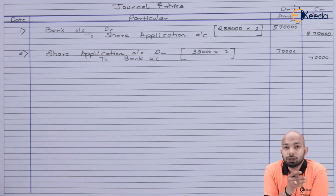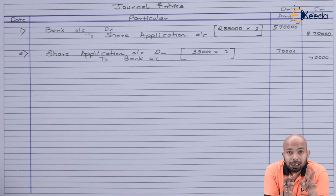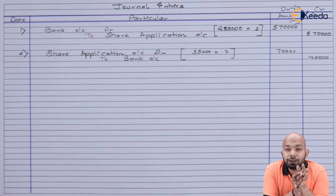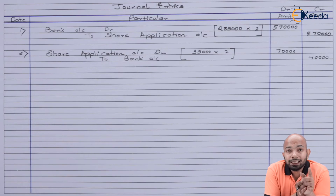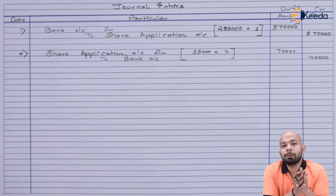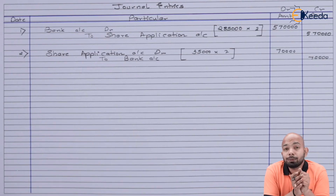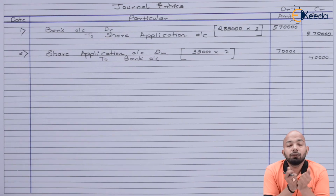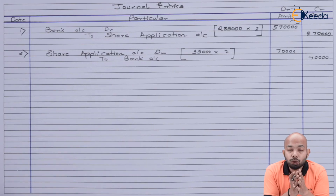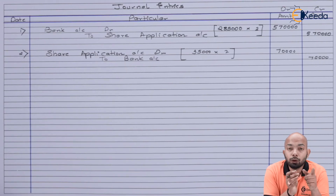Total of ₹70,000 has been refunded. We received ₹5,70,000 and refunded ₹70,000, leaving a net of ₹5,00,000. Since 1 lakh shares × ₹2 = ₹2,00,000 is the ideal application amount, we currently hold a net of ₹5,00,000 — meaning ₹3,00,000 is excess. That ₹3,00,000 will be utilized for share allotment, so let's pass the transfer entry.